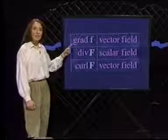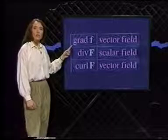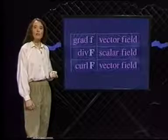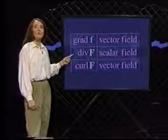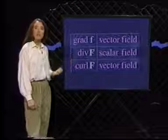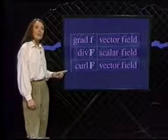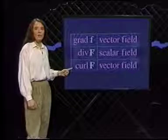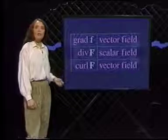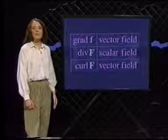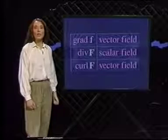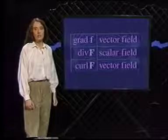Taking the gradient or grad of a scalar field results in a new field — a vector field. The divergence or div of a vector field is a scalar field, and taking the curl of a vector field gives rise to another vector field. In bands C and D, we're going to look at each of these operations in turn.